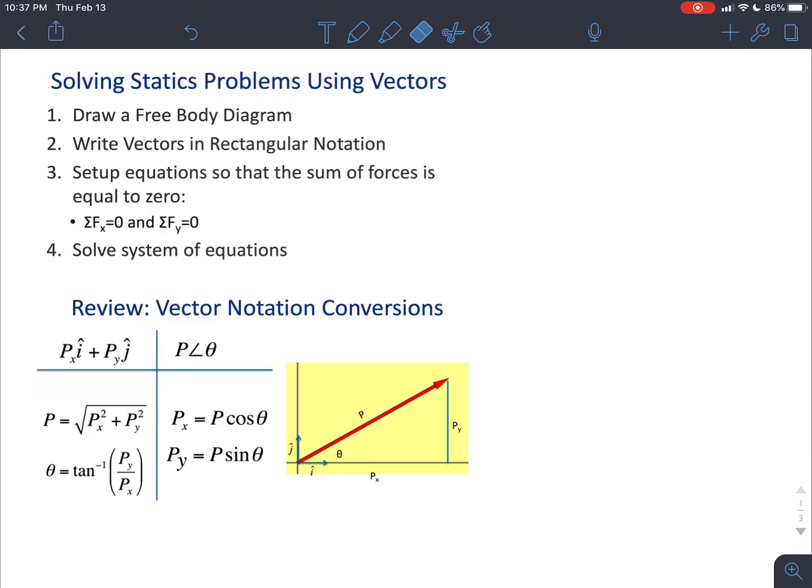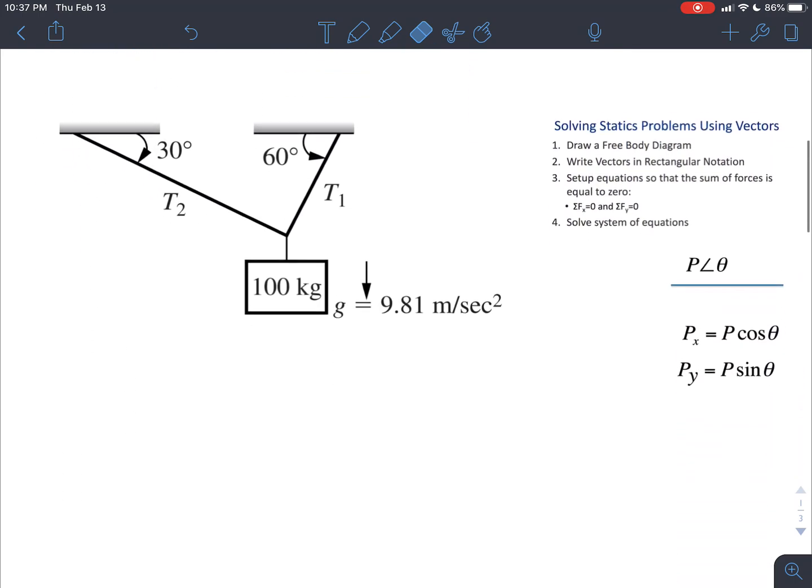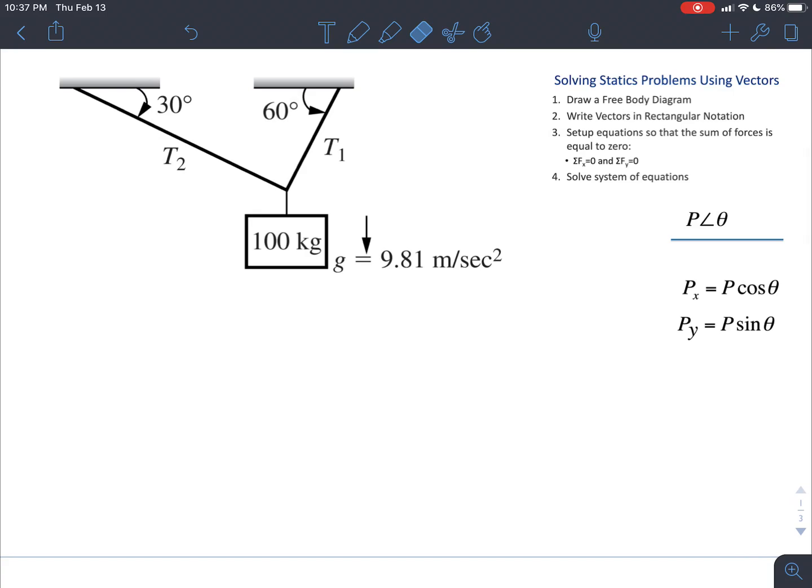So now we're going to use this statics problem solving method to solve a problem. We have a 100 kilogram mass that is hanging from two ropes that are attached to the ceiling. It's important to note that this is 100 kilograms, which means we have a mass and we need to convert that to a weight because weight is a force and mass is just a property of an object.